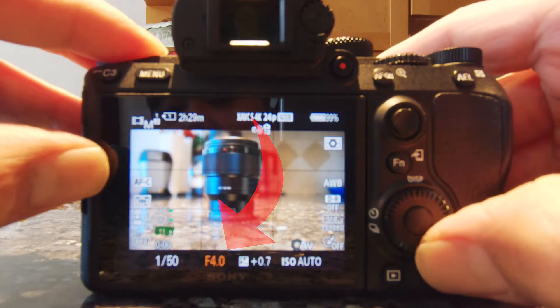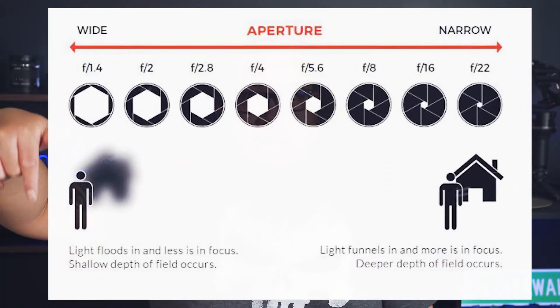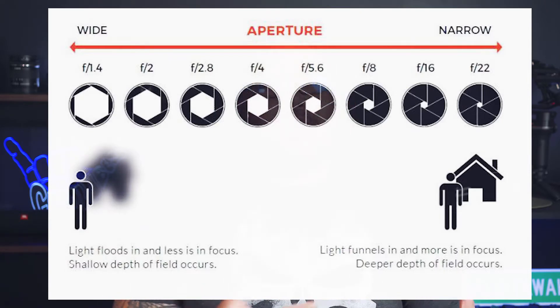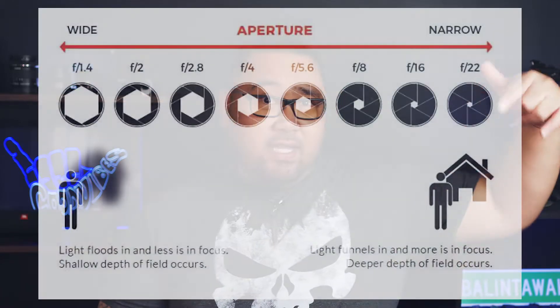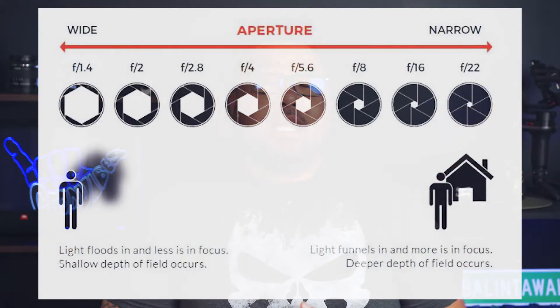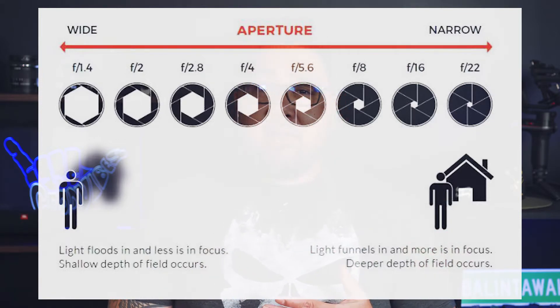The higher the f-stop, the smaller the opening. If you look at this chart, f/1.4 has a bigger opening, which means more light can get into your camera and there's a shallow depth of field — meaning the subject gets separated from the background. This is how you get those blurry backgrounds. At f/22, the aperture opening is smaller, less light comes in, giving you a deeper depth of field where your subject and background are not separated and it looks flat.